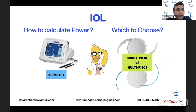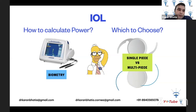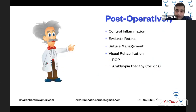For biometry in trauma cases, there may be significant corneal scarring making keratometry unreliable. The fellow eye's keratometry readings can be used instead. The SRK-T formula generally works well for these cases. A three-piece or multi-piece IOL is preferred; a single-piece IOL is acceptable only if both anterior and posterior capsules are intact and well-preserved. Post-operatively, control inflammation, evaluate the retina, and manage sutures — removing them at three months, or sooner if loose.